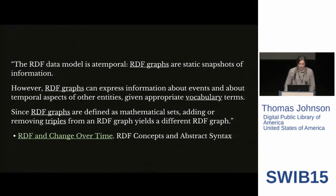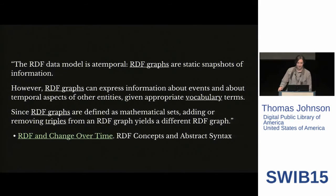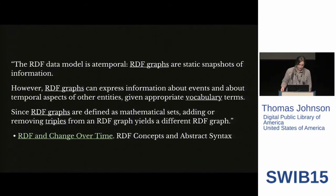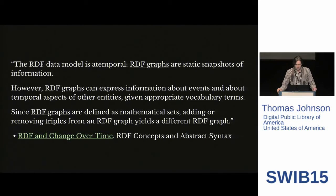But one thing that I've noticed is that we're talking a lot about read-write data workflows and information management workflows. And while the community has gotten really good at publishing and consuming linked data, questions about how we manage it are mostly open. We've seen implementations here that serialize JSON-LD into NoSQL data stores, implementations that serve REST APIs from Elasticsearch, object graph modelers, and linked data platform and ad hoc patch formats. This looks to me like the community grappling with how to manage graphs through stateful lenses. The RDF data model is atemporal — graphs are static snapshots of information — yet RDF graphs can express information about events and temporal aspects of other entities. Since graphs are defined as mathematical sets, adding or removing triples from an RDF graph yields a different graph. This problem is called out directly in RDF 1.1 in the section called 'RDF and Change Over Time.'